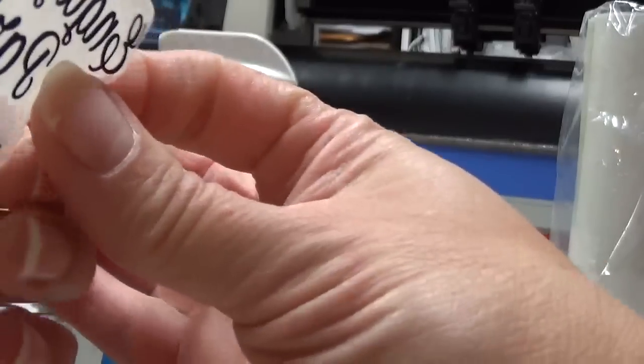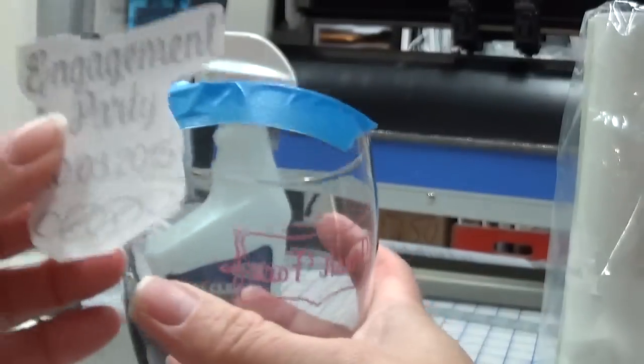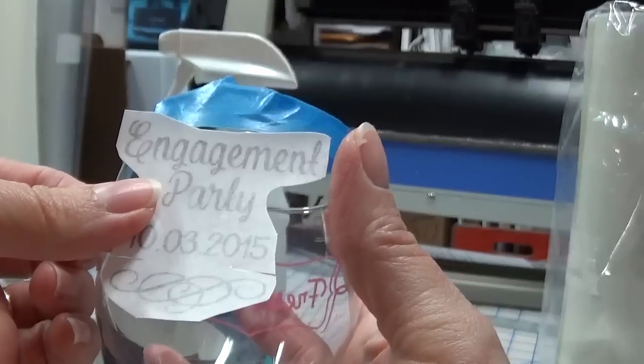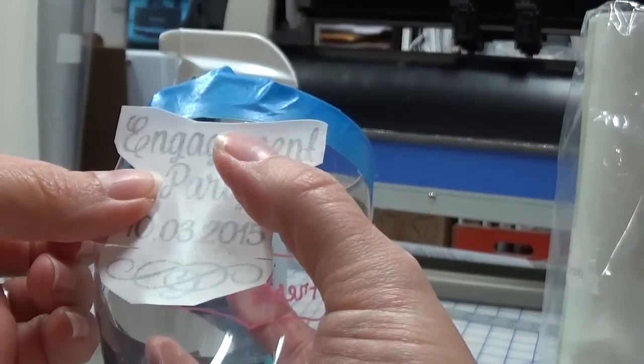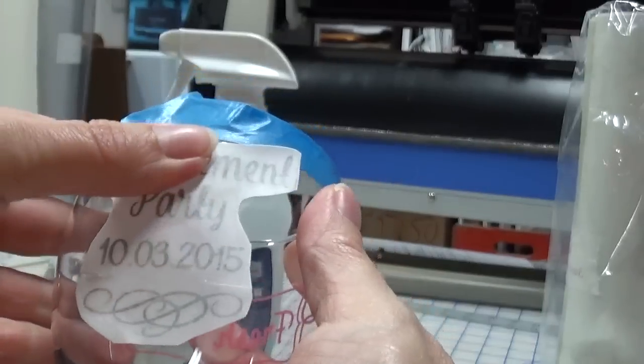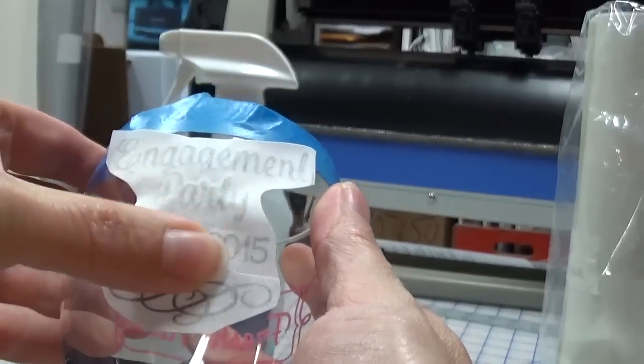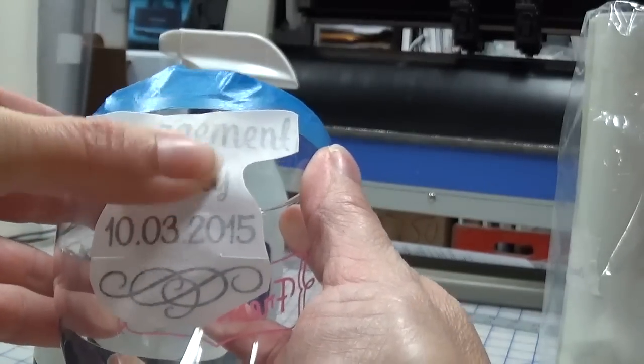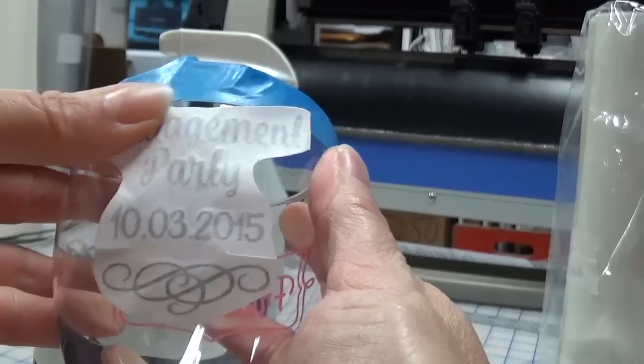So we have our decal off the backing paper. Now we're going to use that line there. Tape is a line. We put it down and we start in the middle. We press it down in the middle, and then we work our way out.